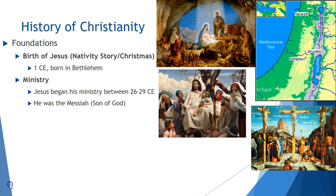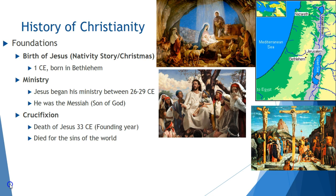Between 26 and 29 CE, Jesus began a ministry, and the tenet of this ministry was that he was the Messiah, the Son of God. Due to Jesus' radical message of being the Messiah, he was crucified, or killed on a cross, in 33 CE. Christians hold that Christ died for the sins of the world and to open heaven to all people.